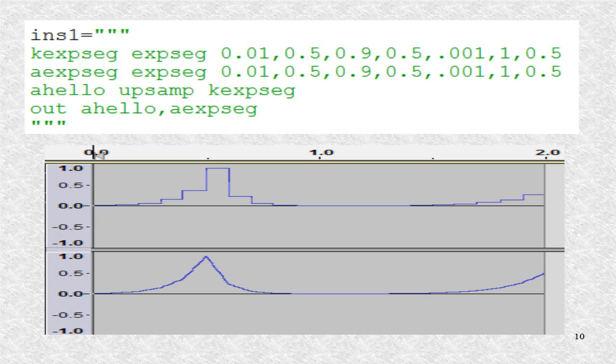This is an example of an instrument string using the EXPSEG opcode. It goes exponentially from 0.1 to 0.9 over 0.5 seconds. Then it goes to 0.001 after another 0.5 seconds. Then after another second, it goes to a level of 0.5.